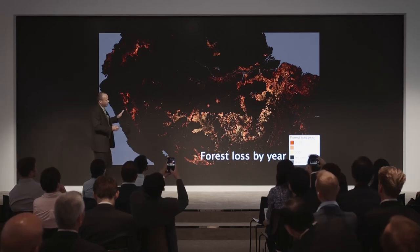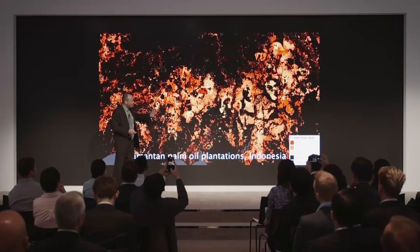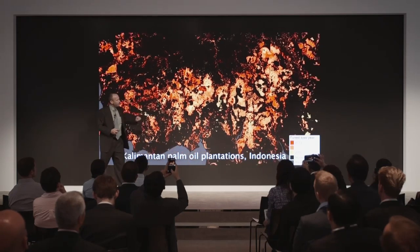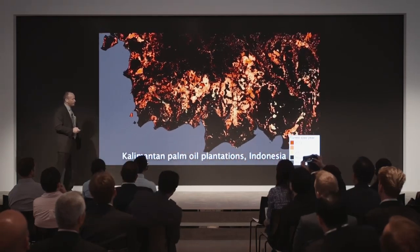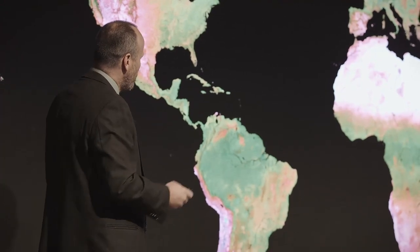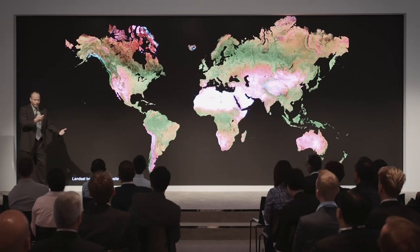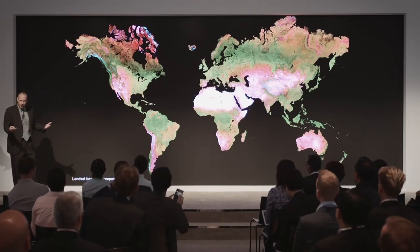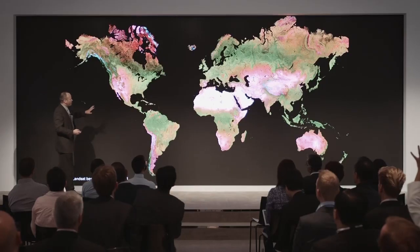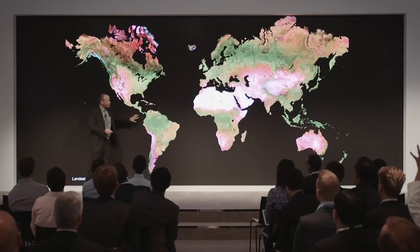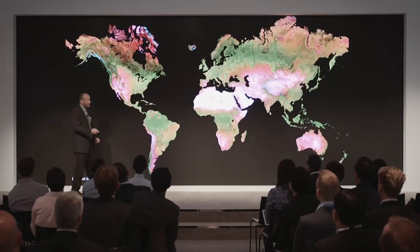The biggest thing I want to convey is: how do we move from this type of data to a thematic output? When we show the time-lapse sequences, those are raw pictures — images. We need to turn those into quantitative estimates. For example, when you look at the changes across Acre State in Brazil, how much forest was lost? How much forest grew back? We have to have very clean inputs of imagery to turn that into a biophysical estimate of forest cover.